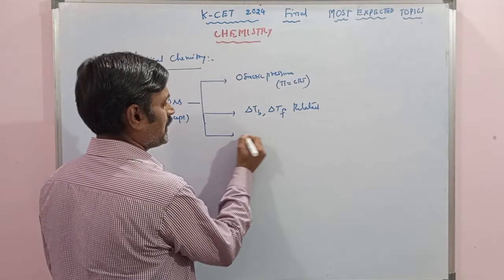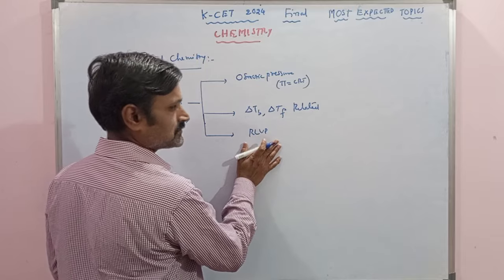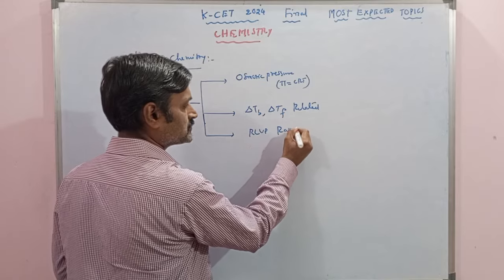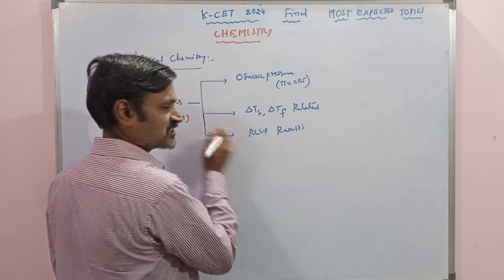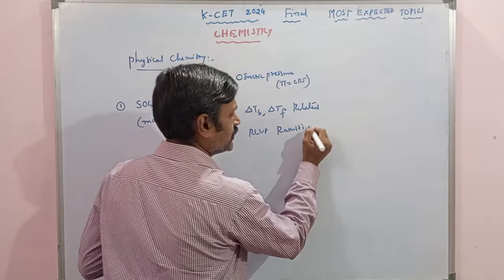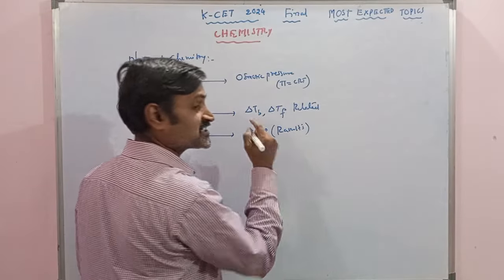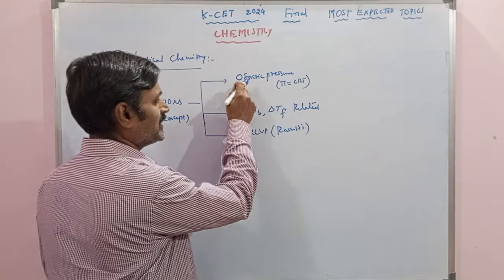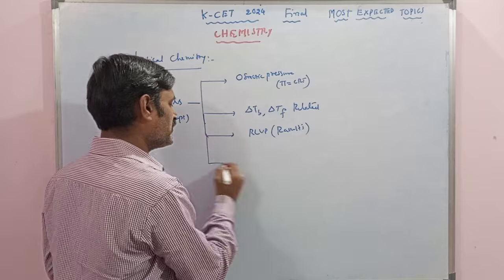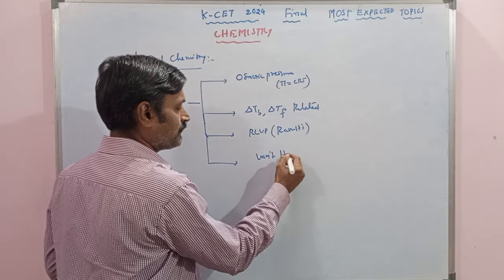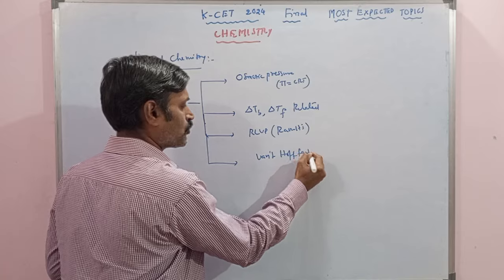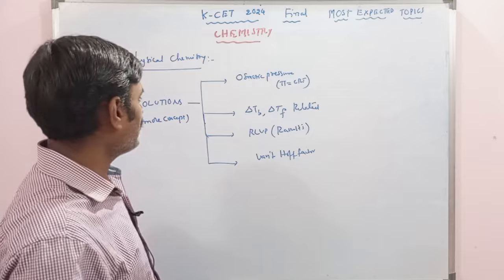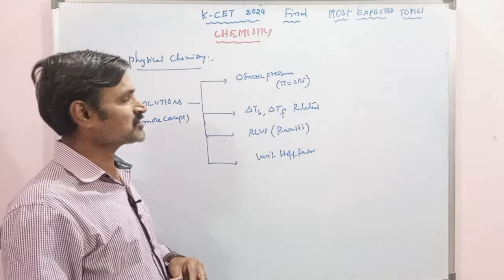After that, RLVP — relative lowering of vapour pressure — Raoult's law based questions. Any question asked on Raoult's law — determination of molar mass of non-volatile solute — one question possibility is there. In this, chances are less; they will go to the van't Hoff factor. Definitely van't Hoff factor questions from previous examinations, once you prepare, will be coming in this KCET examination.